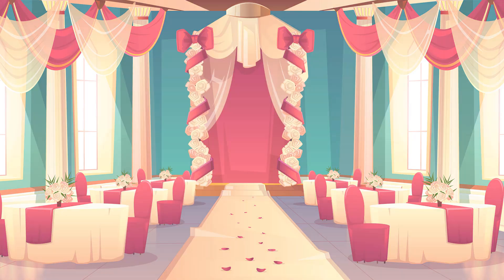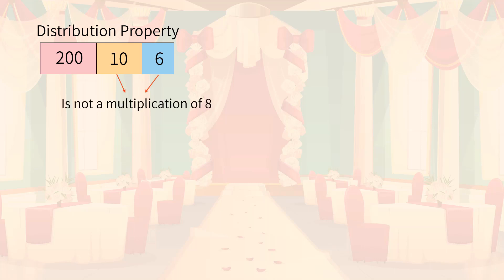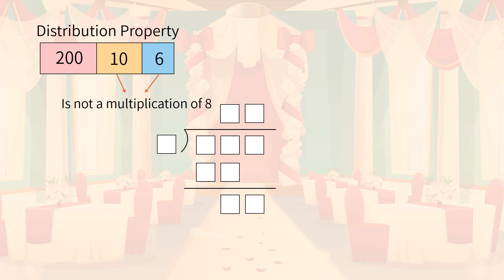We have learned about the distributive property for division before. But, as 10 and 6 cannot be divided by 8 without remainders, we should find another method to make it. Do you still remember the column multiplication? Similarly, we can do long division here with a few signs and steps different. We first write a division symbol,